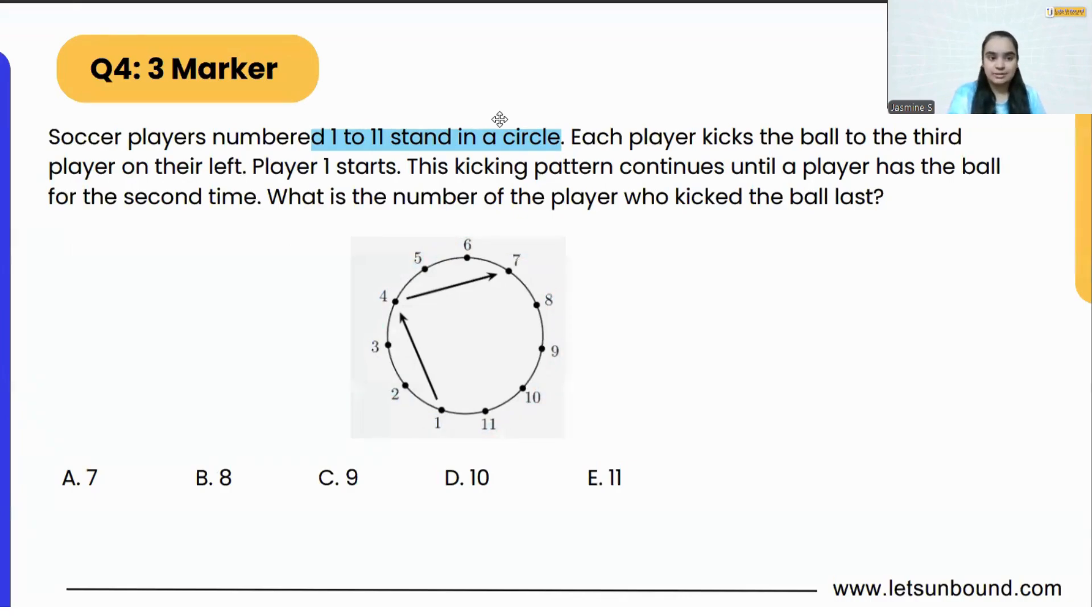Each player kicks the ball to the third player on the left. So as they are standing in circle, they are moving clockwise like this towards the left. Every player is going to kick the ball to the third person on their left, so left means clockwise. Player 1 starts. Now player 1 is over here, he will start, so he will kick the ball to the third person: one, two, third person which is number four. And number four again will kick to the third person: one, two, three, number seven. And the pattern continues.